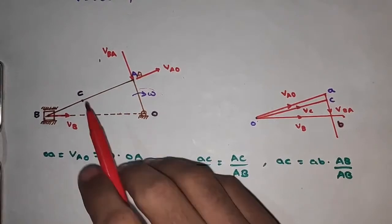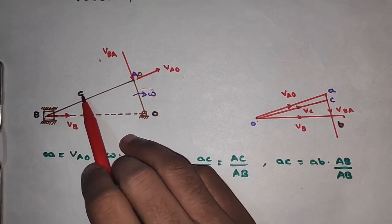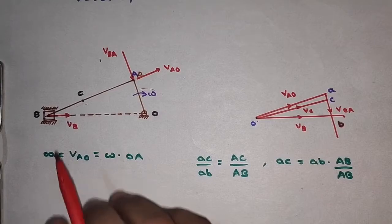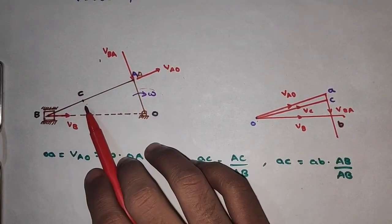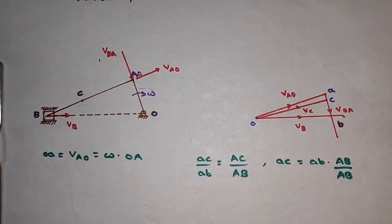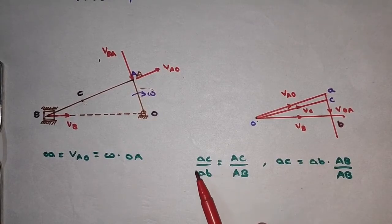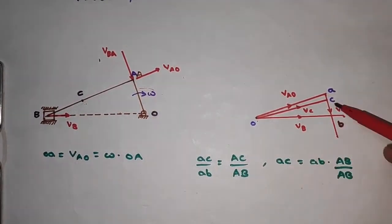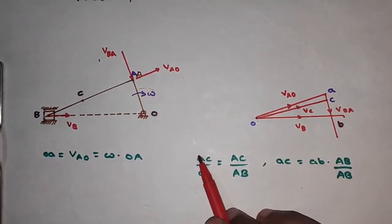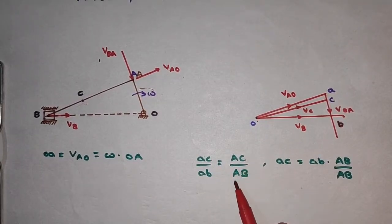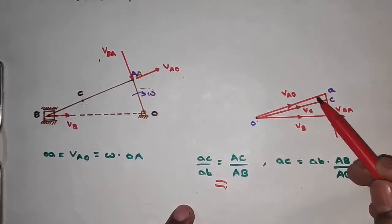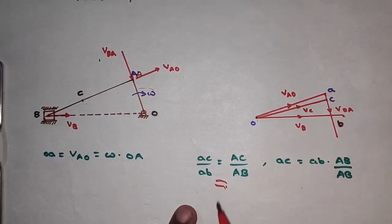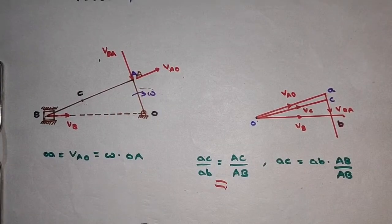Now to determine the velocity of any point on the connecting rod, take point C on the connecting rod. We use the condition: AC upon AB in the velocity diagram equals capital AC upon capital AB in the actual mechanism. The ratio of the two vectors in the velocity diagram equals the ratio of the corresponding link lengths.